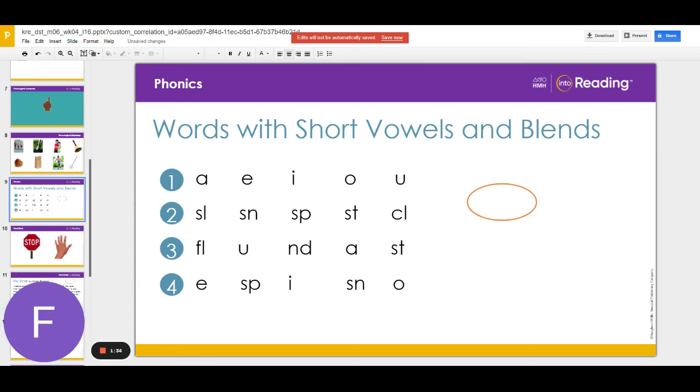Now, I will place the oval around the vowel or blend and you will say its sound or sounds. Are you ready? What sound? U. Good job.